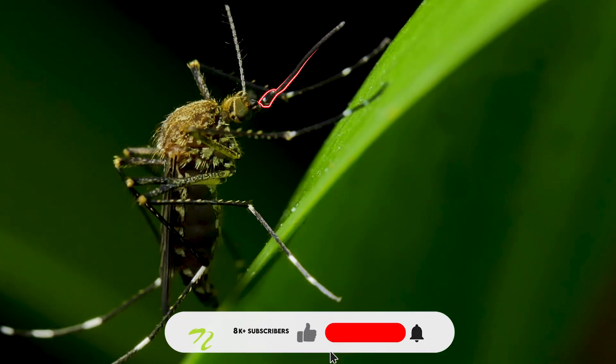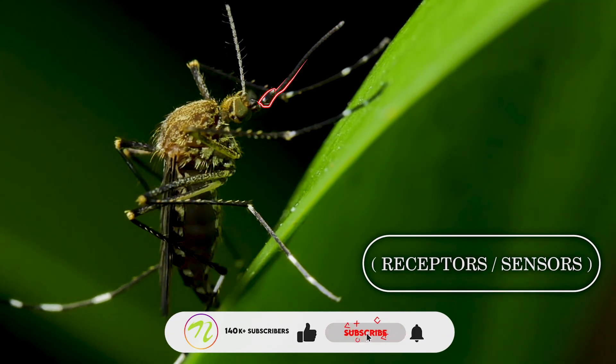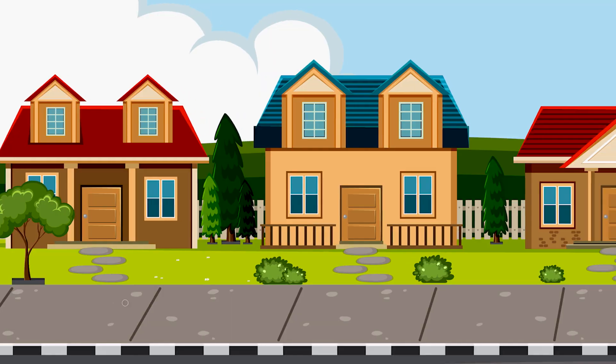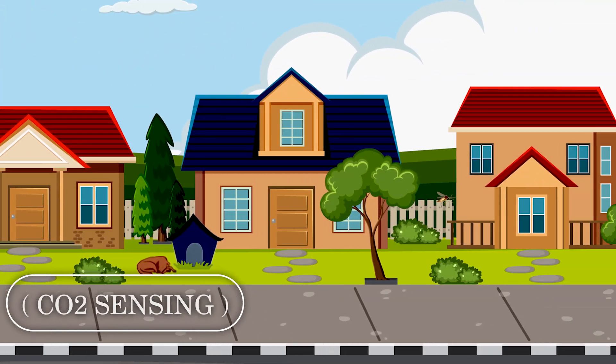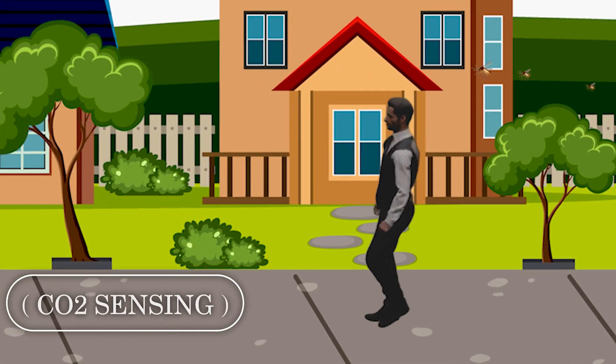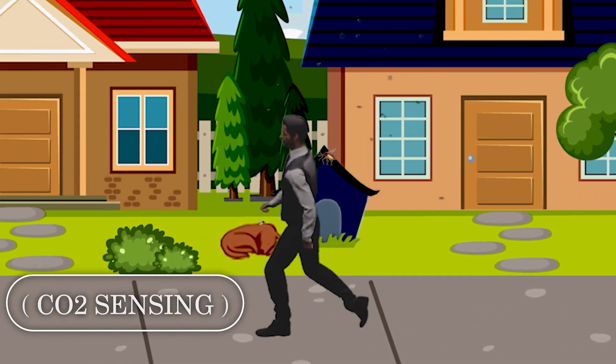How do mosquitoes find humans? Mosquitoes have a range of receptors on their antennas. Firstly, mosquitoes sense carbon dioxide exhaled by humans to get within a 5 meter range of a human being.